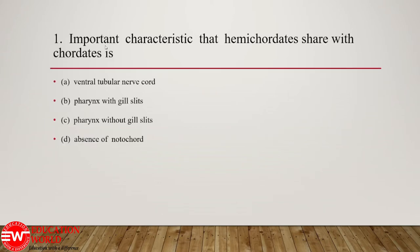The first question: the important characteristic that hemichordates share with the chordates is — option A: ventral tubular nerve cord; option B: pharynx with gill slits; option C: pharynx without gill slits; option D: absence of notochord.